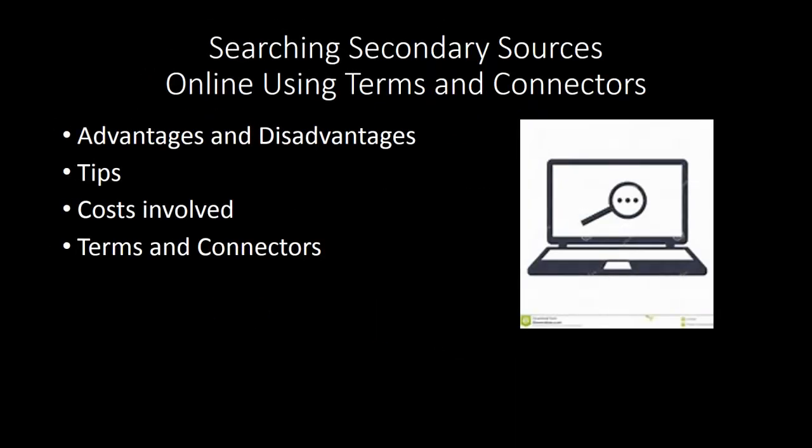Here's a basic outline of what this lesson will cover. We'll talk about the differences between using secondary sources online and in print, and some things to be wary of online, in particular cost. The bulk of this lesson is devoted to using terms and connectors to search online. Although we will be focusing on searching secondary sources, terms and connector searching can be used in any of the commercial platforms in any of the databases. For that reason, we are introducing it earlier in this class rather than later.